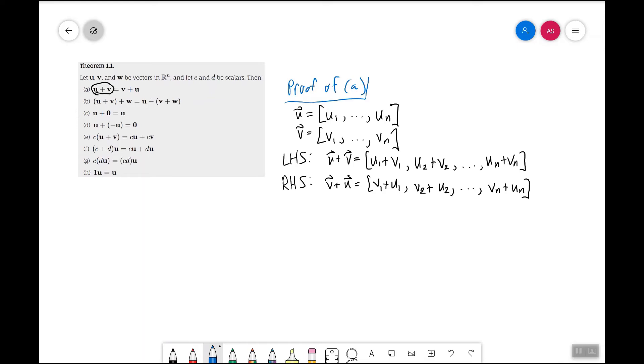However, we know that each of these components are the same, and that's by the commutative property for real numbers. And therefore, since we know that the components of the two sides of this equation are equal, that means the two sides of the equation themselves are equal. So therefore, u plus v is indeed equal to v plus u.